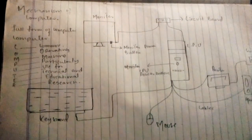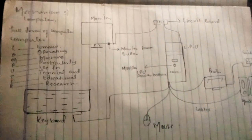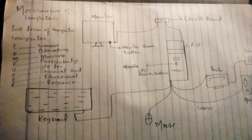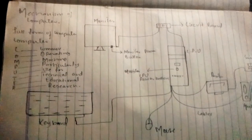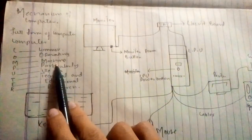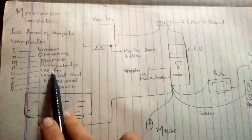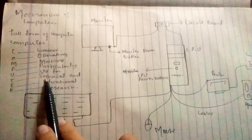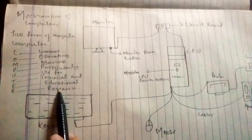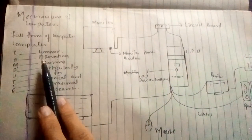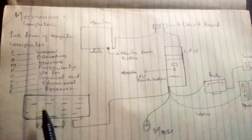Secondly, we will learn the full form of our computer. As we know, the full form of COMPUTER is: C stands for Common, O stands for Operating, M stands for Machine, P stands for Particularly, U stands for Useful, T stands for Technical, E stands for Educational, and R stands for Research. In full form, we can say: Commonly Operating Machine Particularly Used for Technical and Educational Research. This is the full form of our computer.